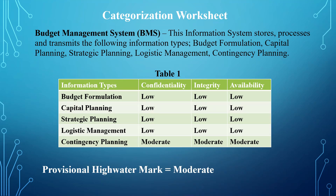But for the purpose of this video, the highest impact level to confidentiality is moderate, the highest impact level to integrity is moderate, and the highest impact level to availability is also moderate. This means the high watermark for the system is moderate — it is categorized as a moderate system. The provisional high watermark is moderate.